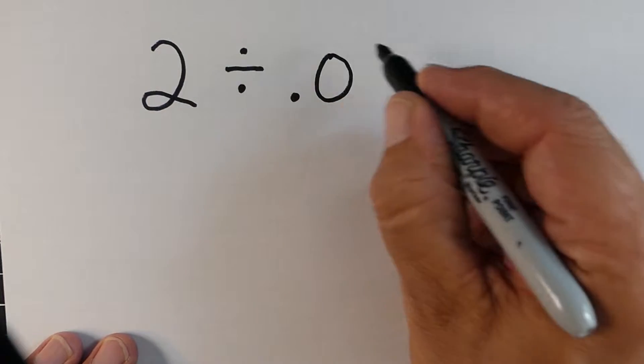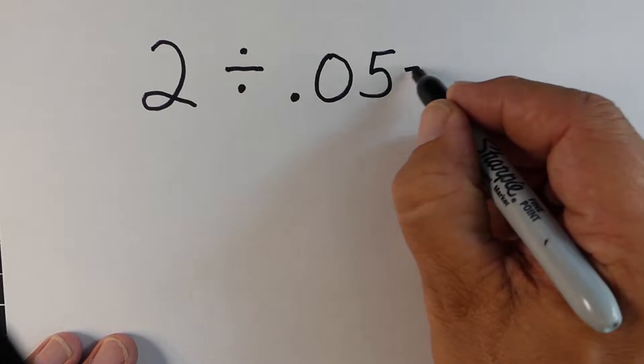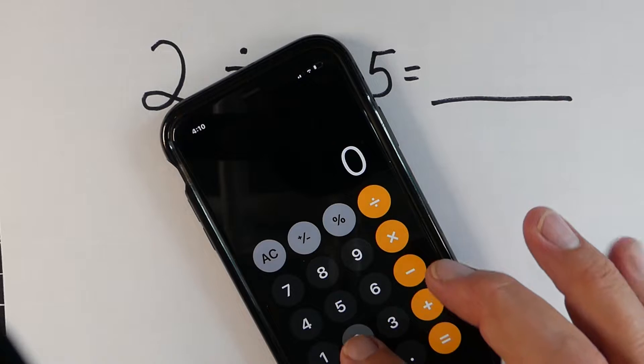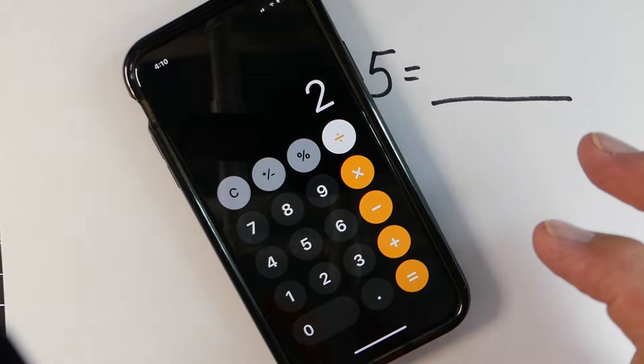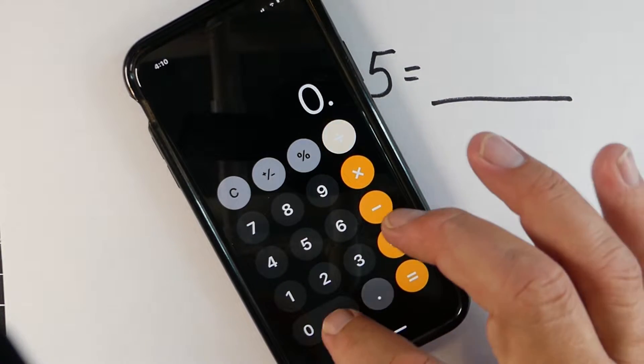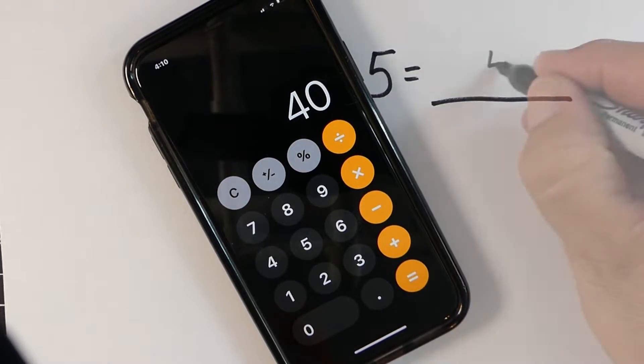Here's another example. So let's say we're starting with 2 dollars and we're going to divide it by 0.05. And when we divide 2 divided by 0.05 we end up with 40.